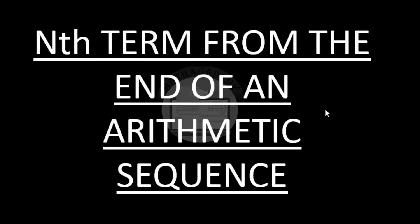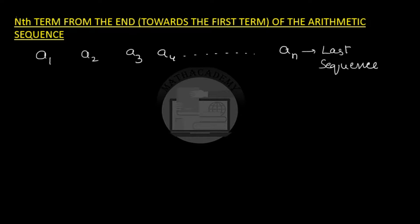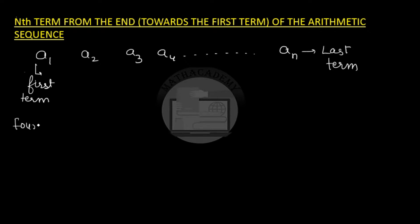Let us see how we determine the nth term from the end of an arithmetic sequence — the nth term in the reverse order. If we have an arithmetic sequence a1, a2, a3, a4, and so on till am, this is our last term. The nth term becomes the last term and a1 is the first term. If we have to find the fourth term from the end, that is the fourth term in the reverse direction.